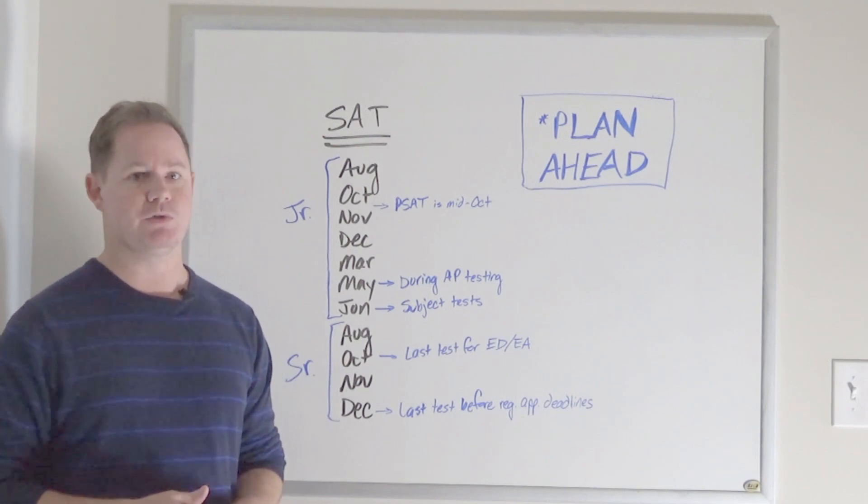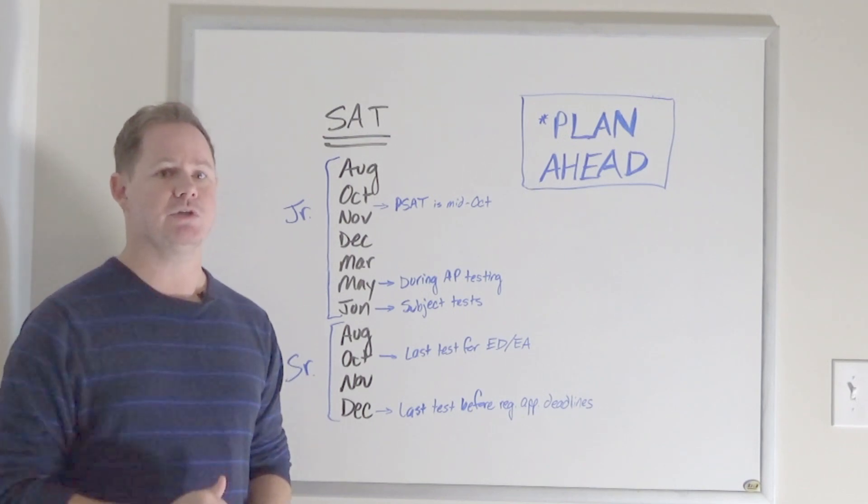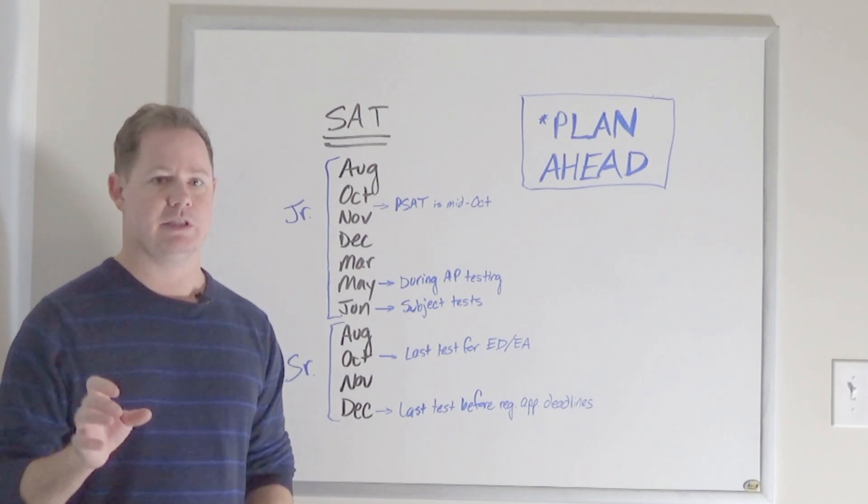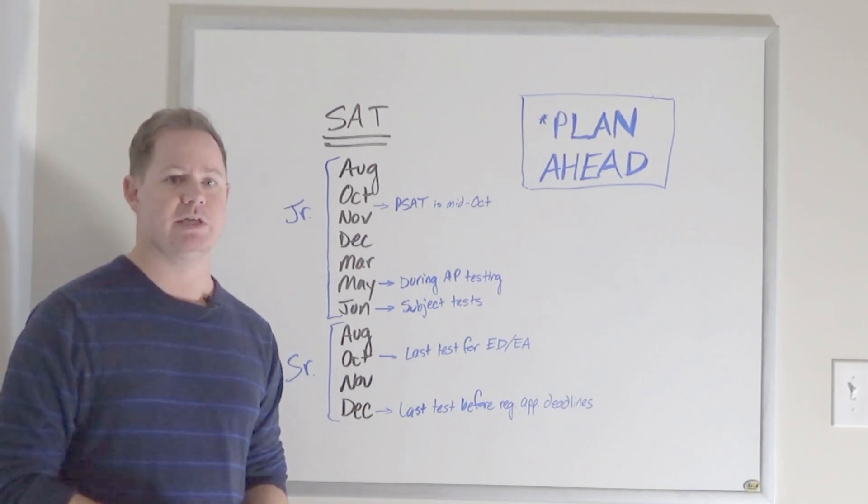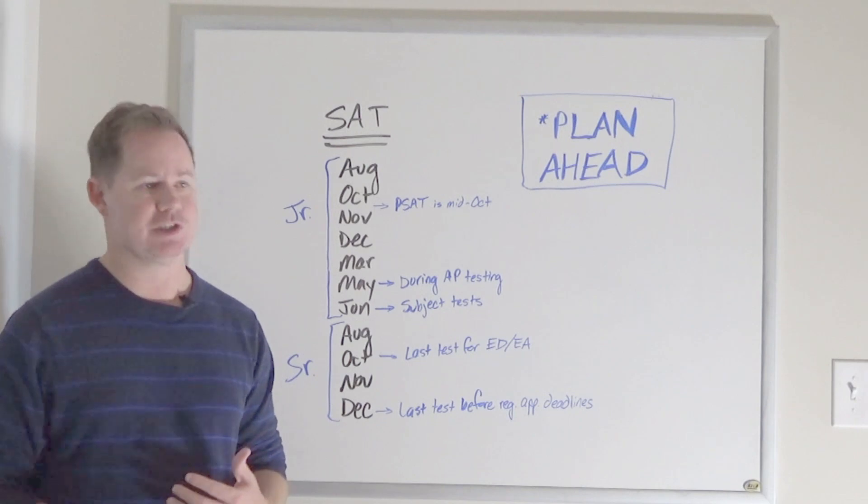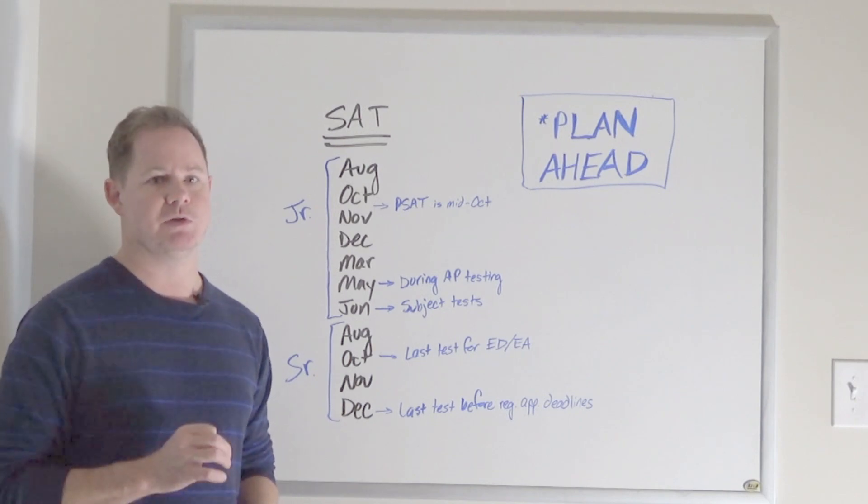So if you took physics as a junior, then at the end of the year in that June test date you might want to take a physics subject test. If you just finished taking U.S. history, that's the perfect time to take a U.S. history subject test.